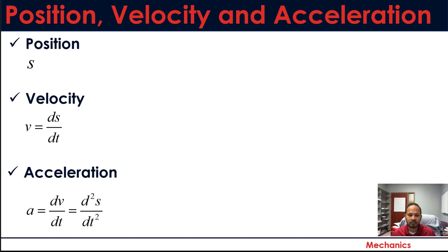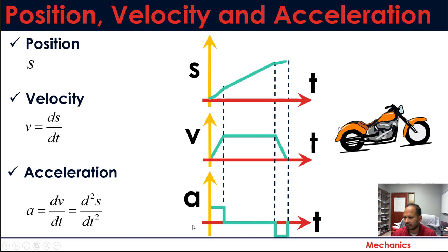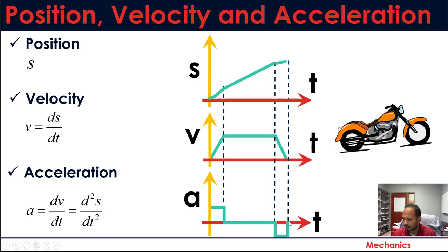That's about where we limit ourselves in dynamics engineering courses at the 2000 level. But in reality, higher order derivatives exist. Graphically: a constant acceleration gives you linear velocity and parabolic position. When acceleration is zero, velocity is constant and position changes linearly. When you decelerate to zero, velocity decreases linearly and position changes parabolically.